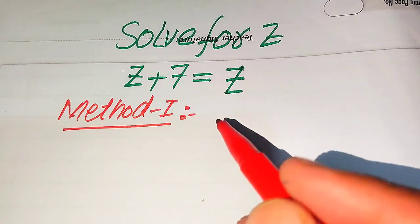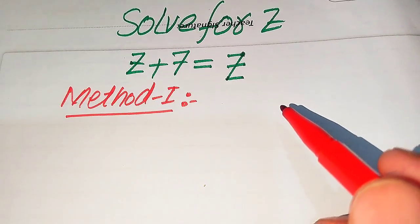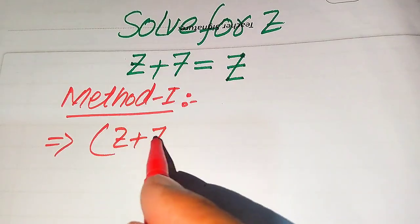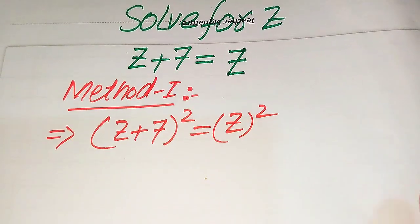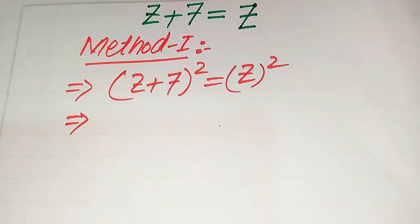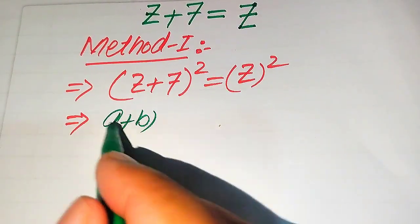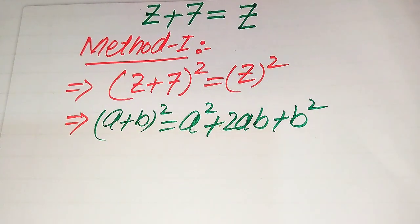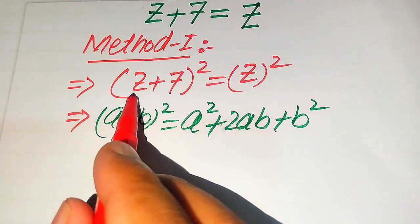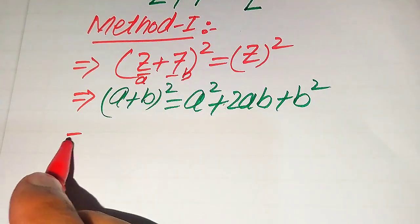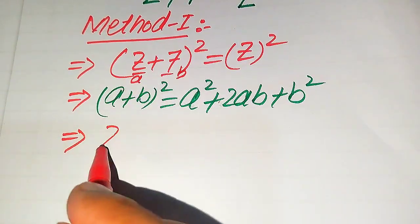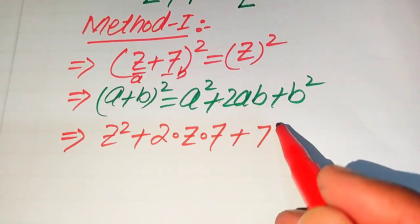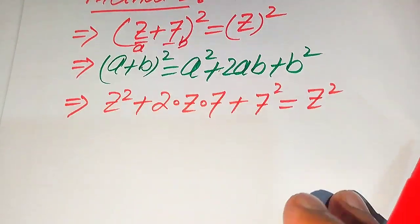To find the values of z, we take the squaring on both sides of this equation. We apply the algebraic formula: (a + b)² = a² + 2ab + b². Here, a = z and b = 7, so we apply this formula and break the left hand side accordingly.